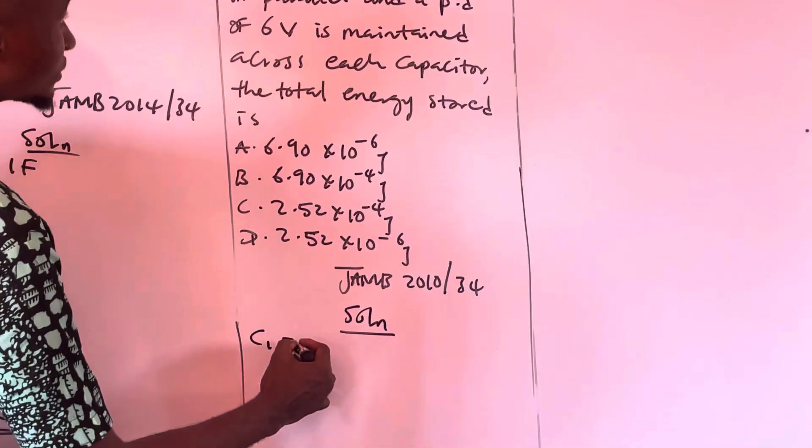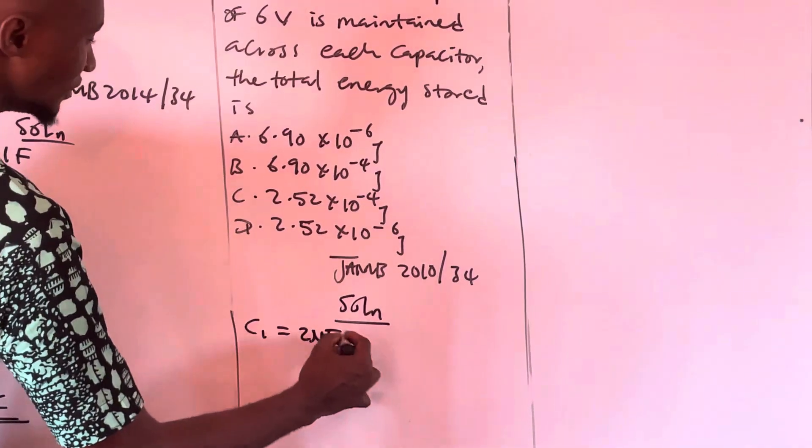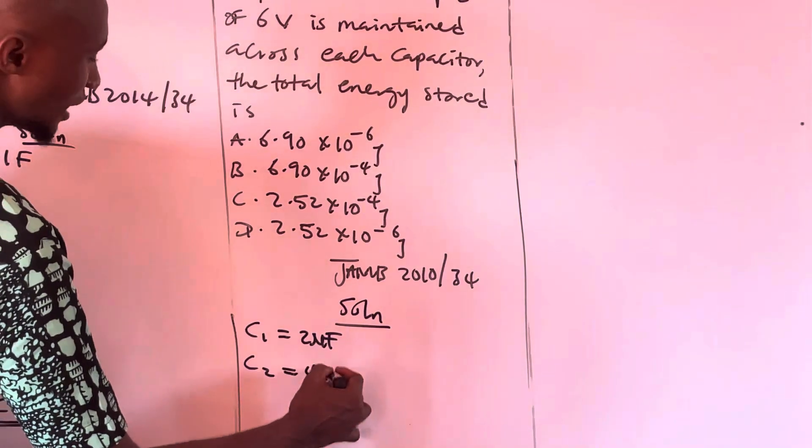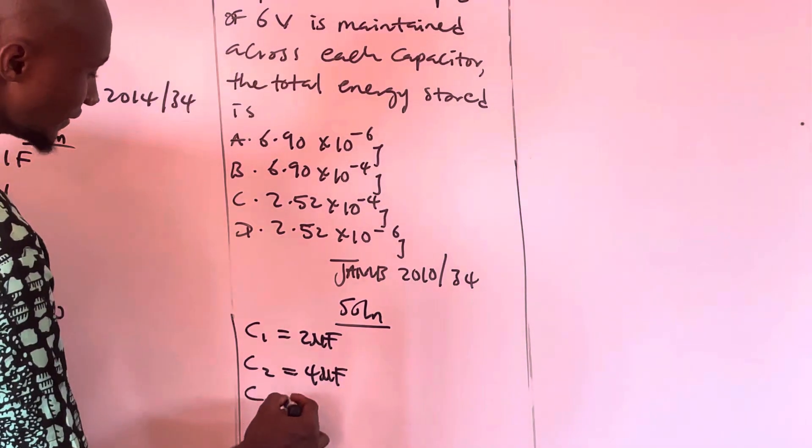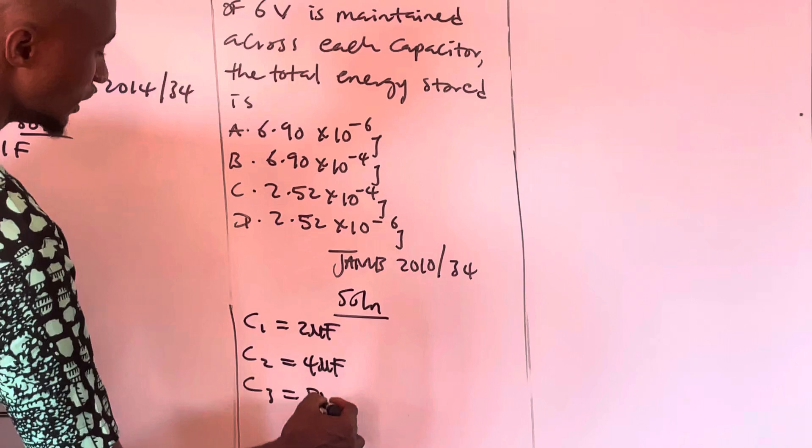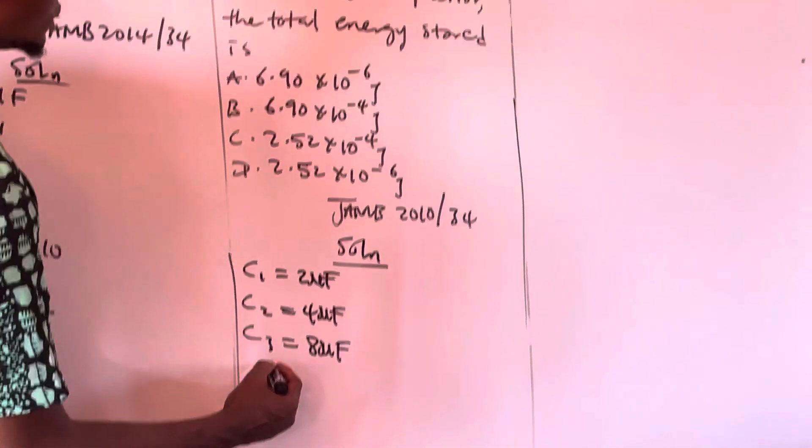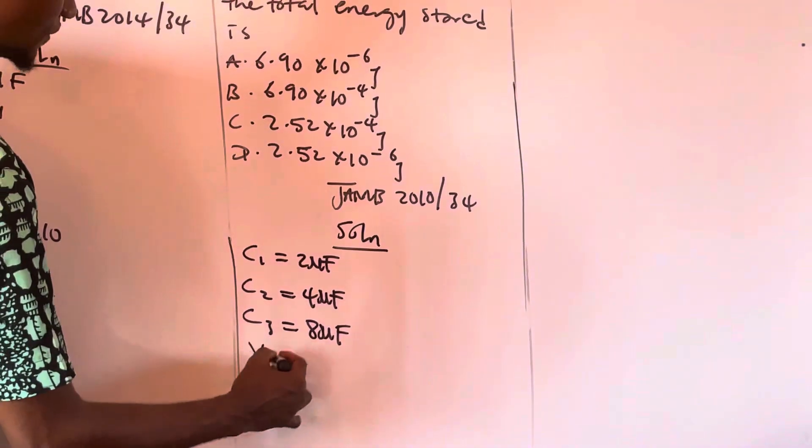C1 is 2 microfarads, C2 is 4 microfarads, C3 is equal to 8 microfarads, and V is equal to 6V.